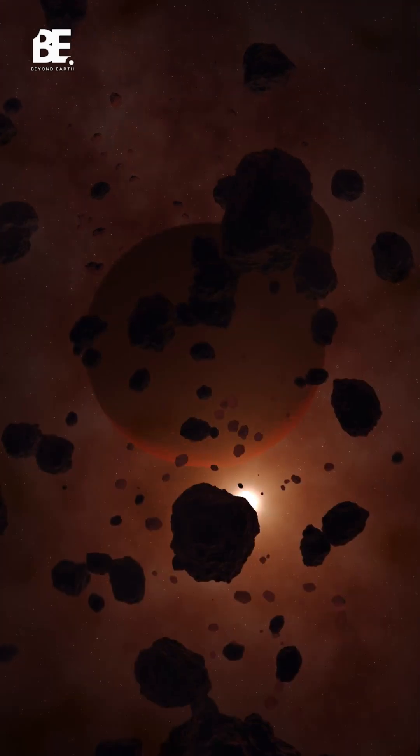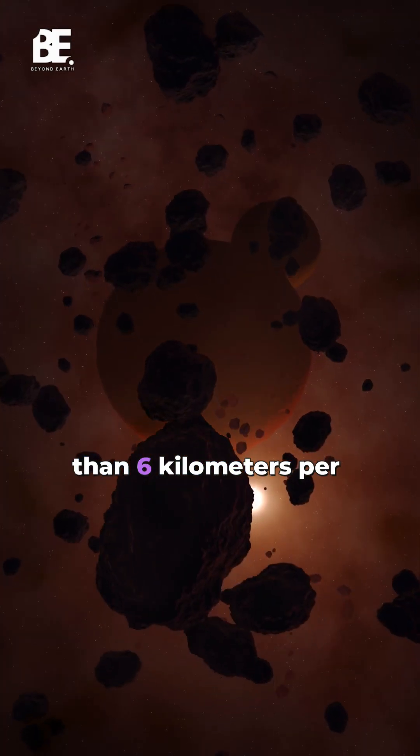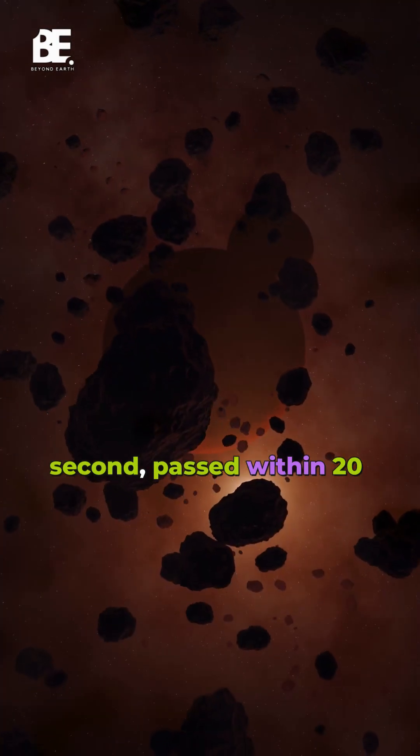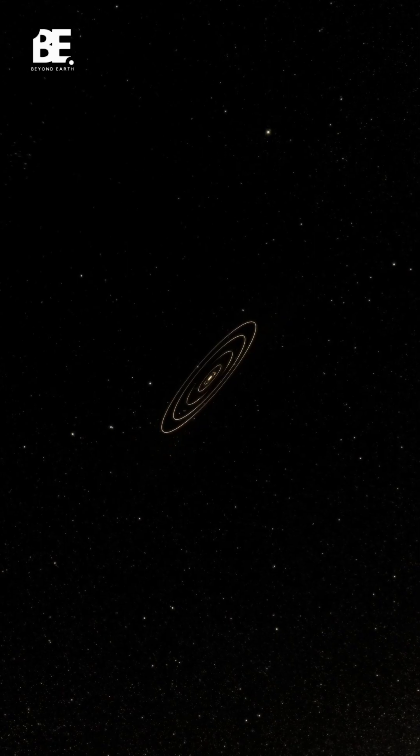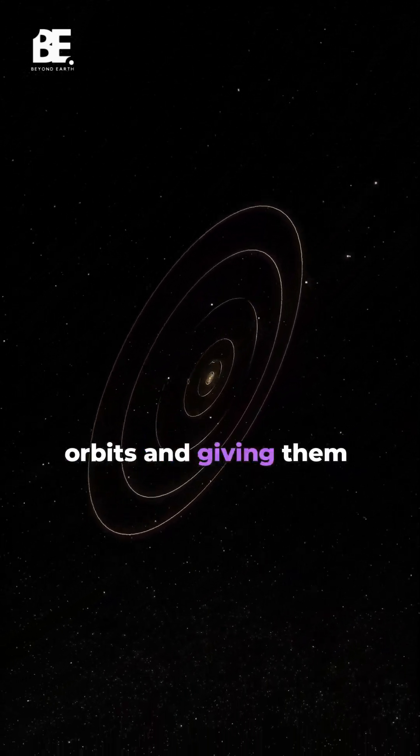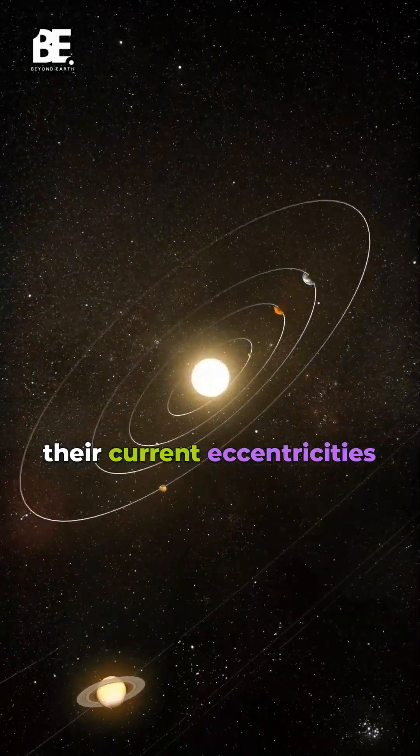According to the study, this massive object, traveling at less than 6 kilometers per second, passed within 20 times the Earth-Sun distance, disrupting the planets' orbits and giving them their current eccentricities and inclinations.